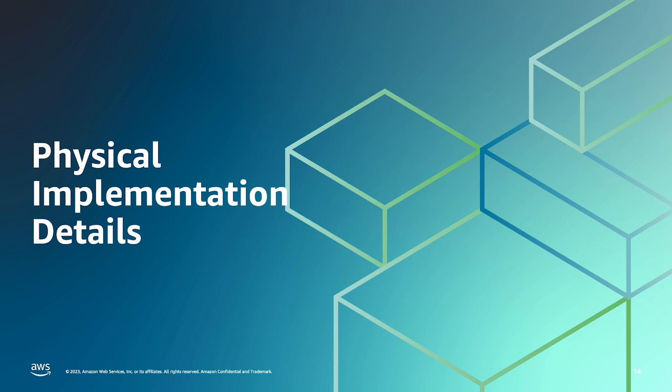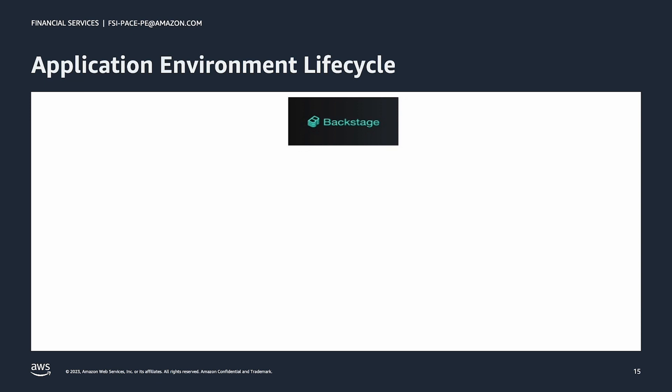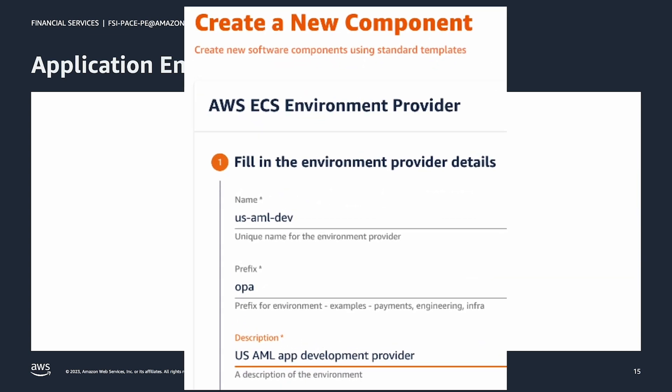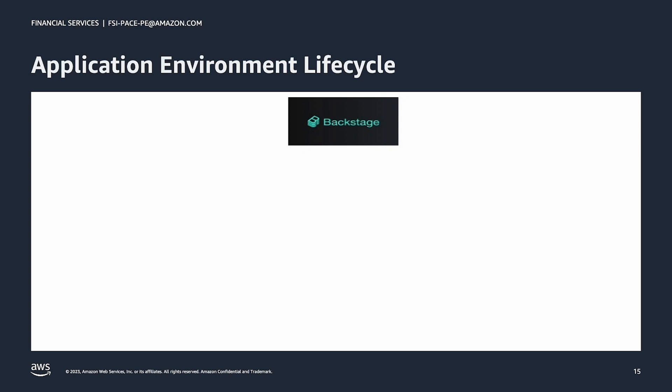When you are first learning OPA, its concepts can seem abstract and challenging to fully grasp. I'll walk you through all of the physical resources that OPA creates and show you when they are created and how they relate to one another. To better understand OPA environments, we'll examine the process of creating and deploying a new application step-by-step. The process begins when a platform engineer creates a new environment where the application will run — and the environment must be of the right type to host an application that uses a specific technology stack. In this screenshot, we can see we are creating an environment for ECS applications. The platform engineer can use the UI to create a new environment only if an environment template has been created previously.